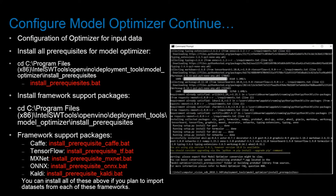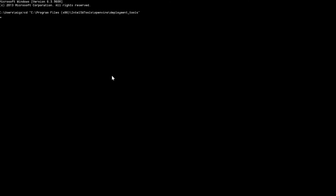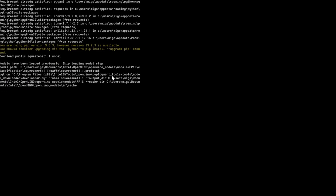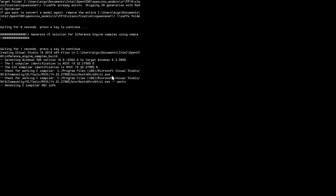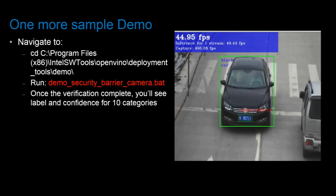Now that we've installed a few framework support packages, let's test whether OpenVINO works. We'll navigate to the tools demo folder and run the demo_squeezenet_download_convert_run.bat file. The result should show a simple text-based classification of a car image, displaying various class IDs for objects the image may represent along with the probability of each. For a more visual demonstration, we can run the demo_security_barrier_camera.bat file, which will produce an image showing the classification of a black car and a captured license plate ID.